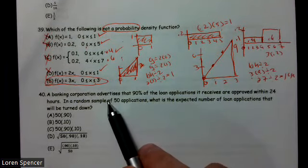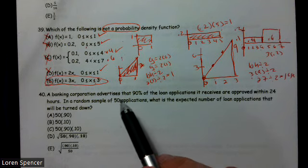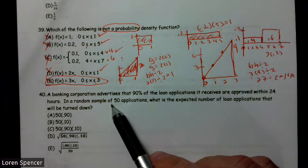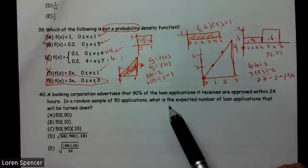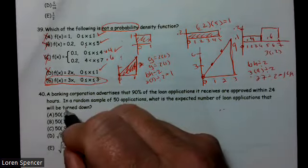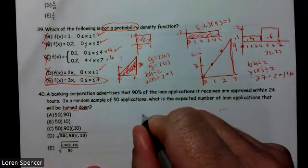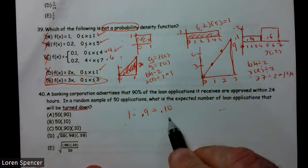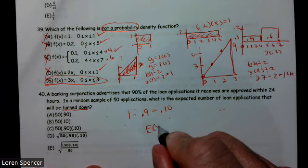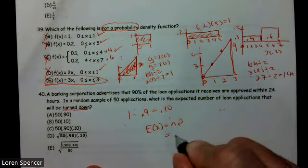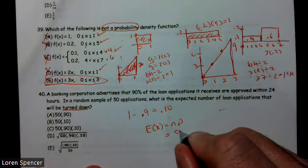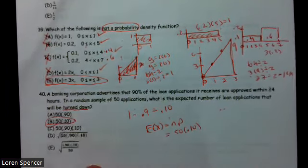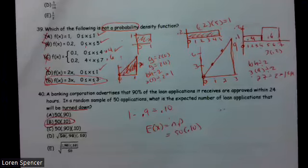Number 40 is very similar to the one we've already done. A baking corporation advertises that 90% of the loan application it receives are approved within 24 hours. In a random sample of 50, what is the number of loan applications that will be turned down? Well, turned down, if 90% are approved, then 1 minus that or 0.10 are turned down. An expected value is NP, so in this case, N is 50, so 50 times 0.10. So our answer choice is B.